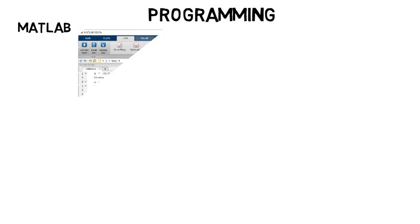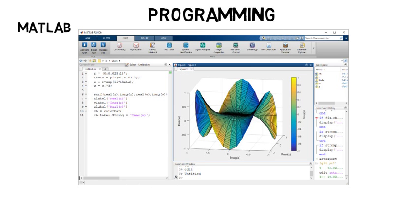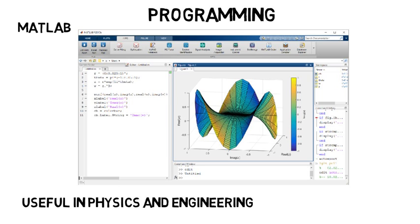You'll also probably take one programming class. A common software you'd learn is MATLAB, where you can program or code plots and complicated physical systems, even something like a satellite orbit, on the computer, which is useful in physics and especially engineering for when something is too difficult to do by hand.